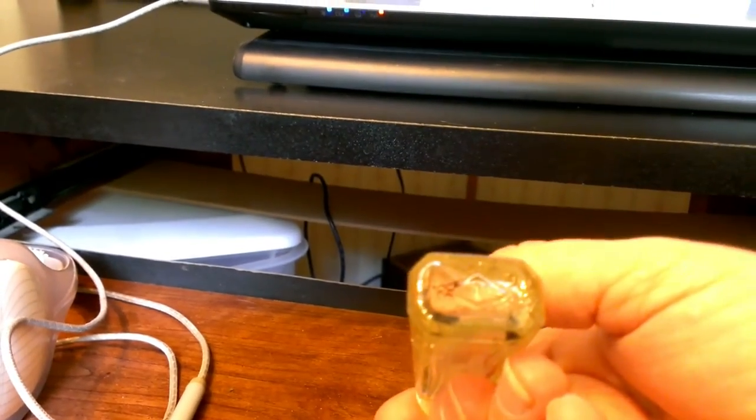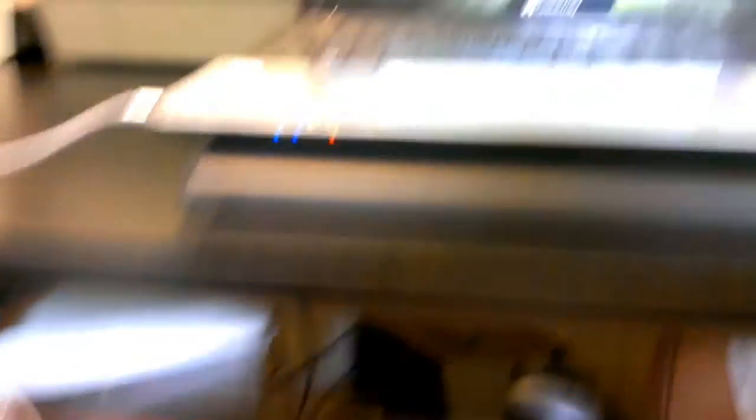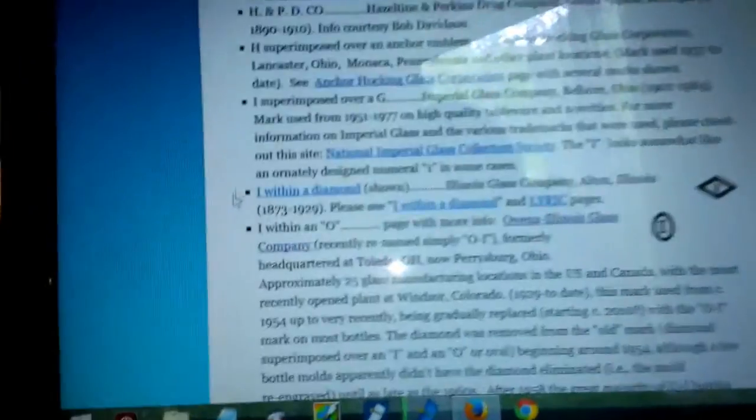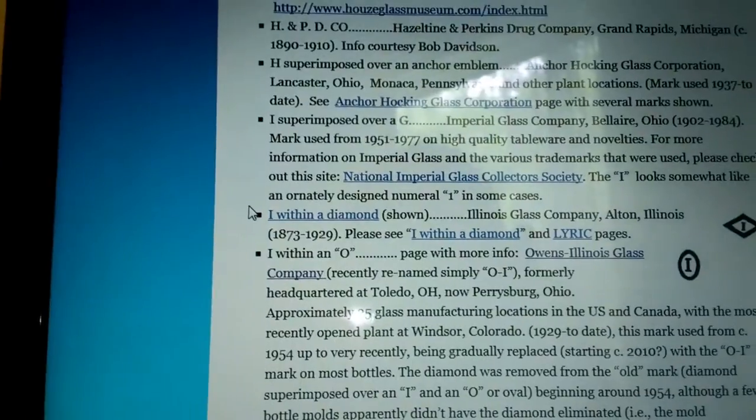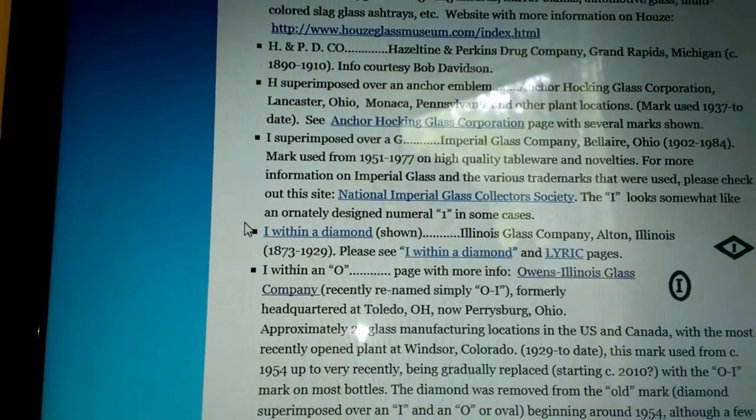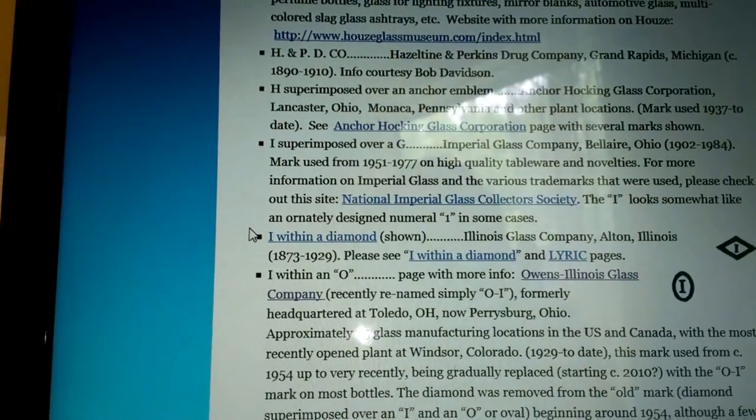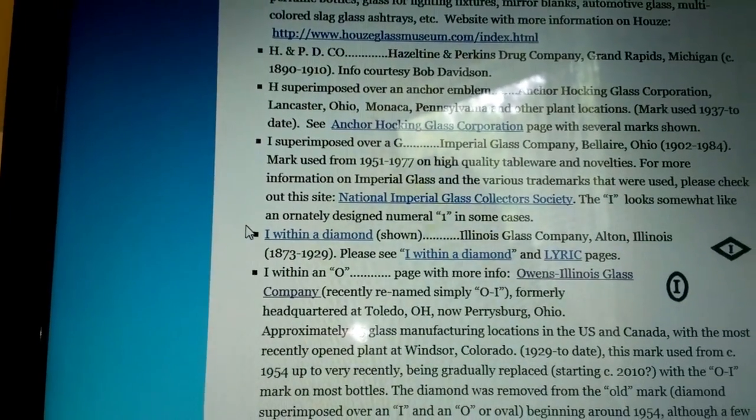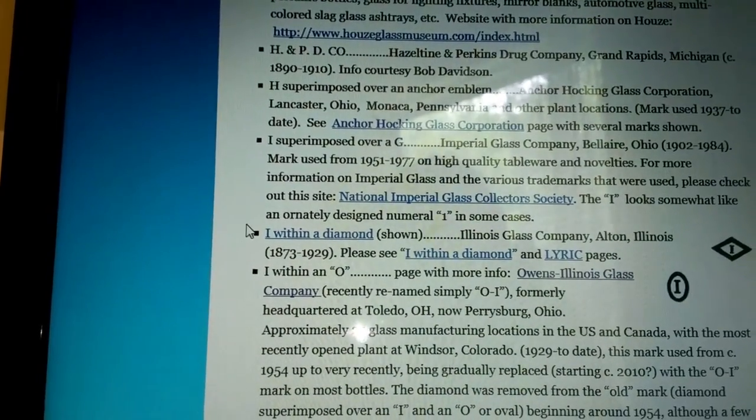Okay, this is an eye within a diamond. And it says that it is eye within a diamond, Illinois Glass Company, Alton, Illinois, 1873 to 1929. So that fits very well the age of the stump.